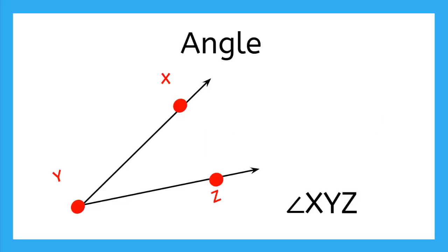An angle is made up of two rays whose endpoints meet at a common point, which we call the vertex. We name the angle by using the letters of the three points on the angle, making sure the vertex point is always the middle letter. So the name of this angle is angle XYZ.